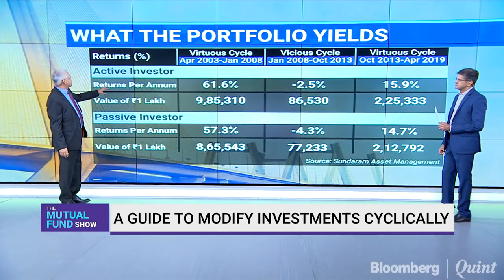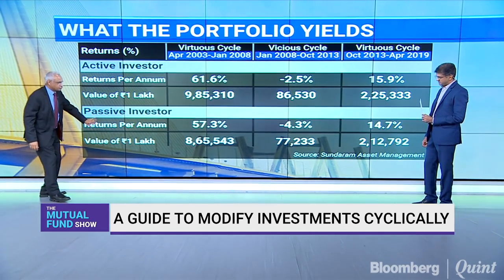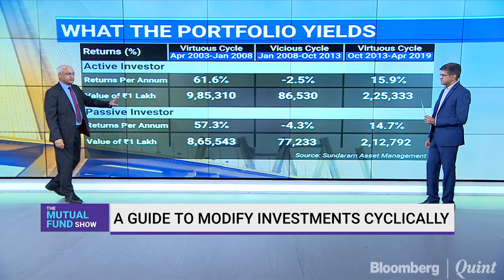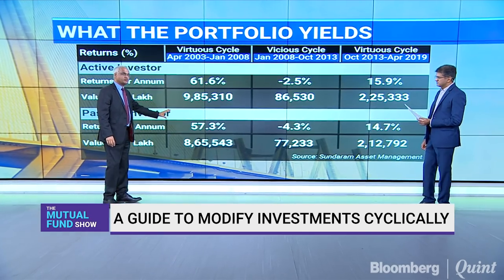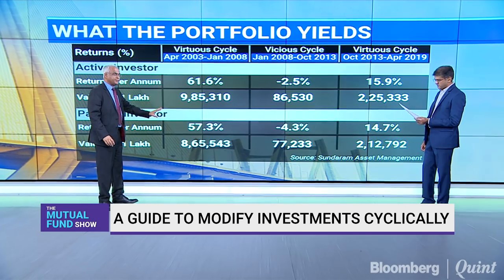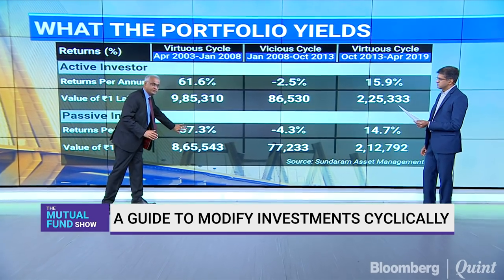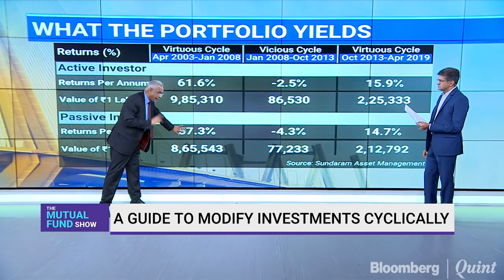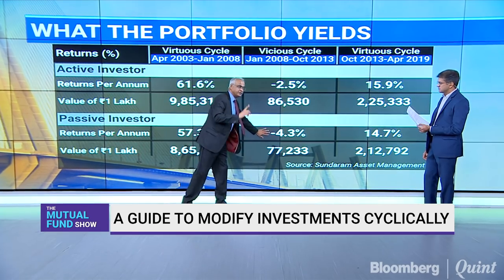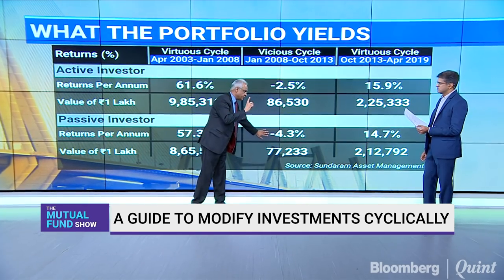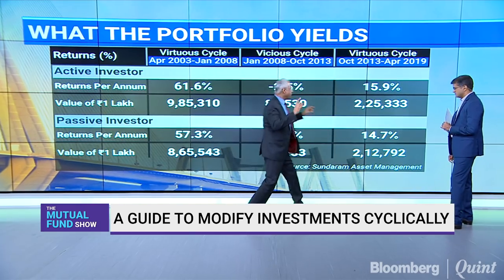If you look across the three cycles, comparing active and passive investors — going from passive to active — the passive portfolio, which was 50% large cap, 40% mid cap, and 10% small cap, delivered a 57% return per annum in one period, lost 4.5% per annum in another period, and returned 15% in the third.